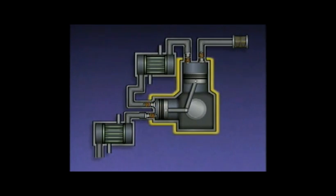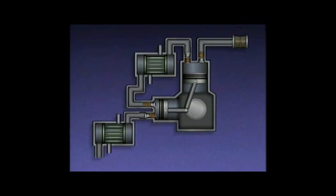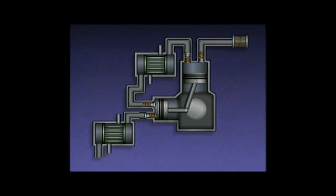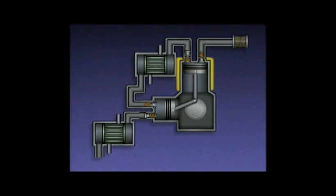The compressor is a multi-stage reciprocating compressor. A multi-stage reciprocating compressor contains two or more cylinders connected so that the discharge of one cylinder is directed into the inlet of another. This compressor takes in air at atmospheric pressure and increases its pressure in two stages. In the first stage, the compressor increases the pressure of the air to approximately 25 PSI.